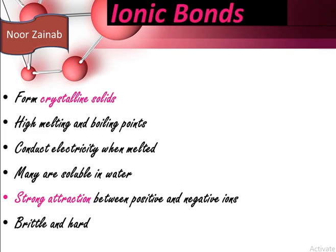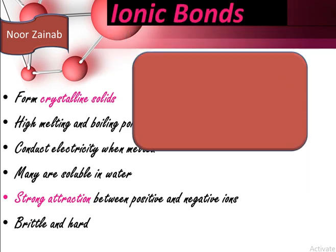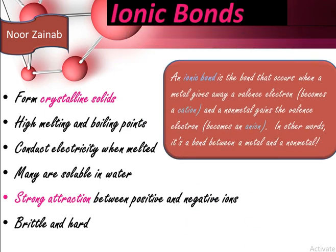Ionic bonds are bonds that occur when a metal gives away a valence electron and becomes a cation, and a non-metal gains a valence electron and becomes an anion. In other words, it is a bond between a metal and a non-metal which involves the transfer of electrons.